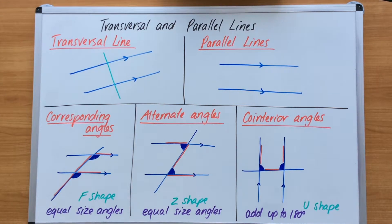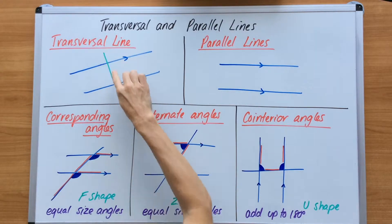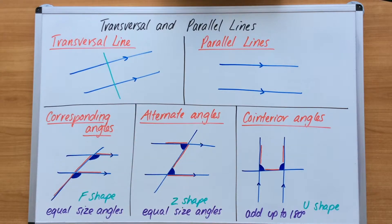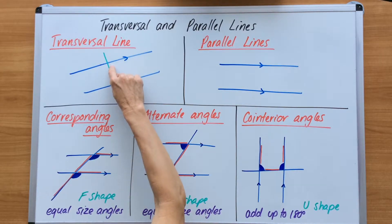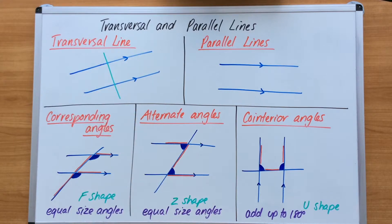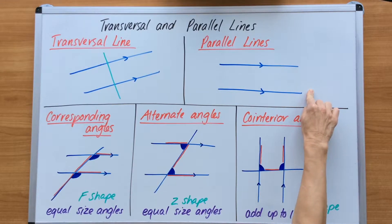In this video we are going to focus on transversal and parallel lines. When a line called a transversal, which is this green line here, cuts two or more other lines such as these parallel lines, a number of angles are formed. We've got 1, 2, 3, 4, 5, 6, 7, 8 angles formed from that transversal line cutting through those parallel lines. As a reminder, parallel lines are lines that are exactly the same distance apart and they will never meet.